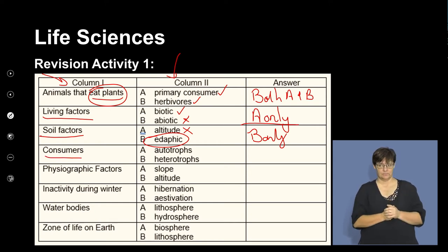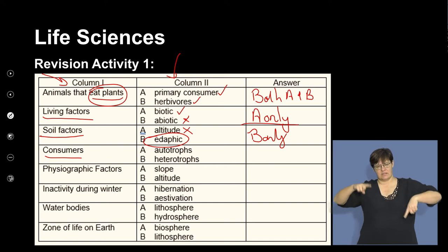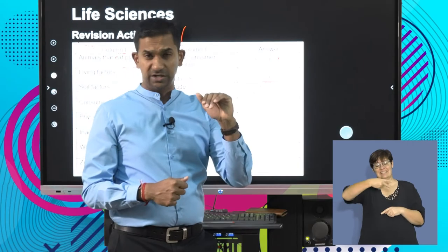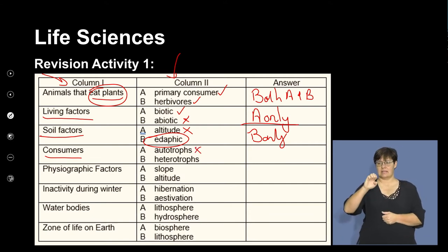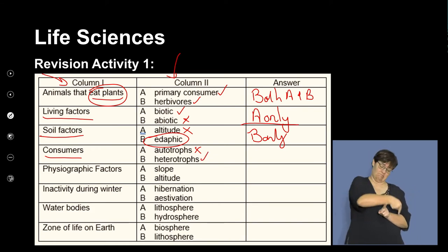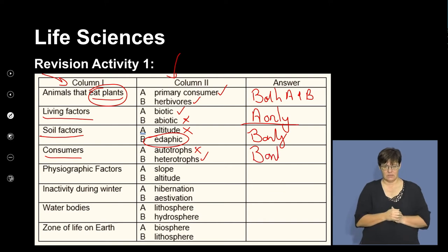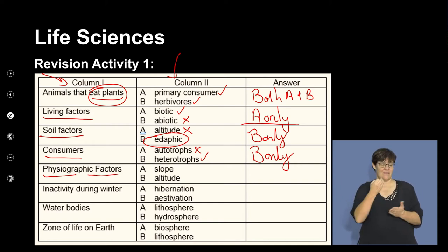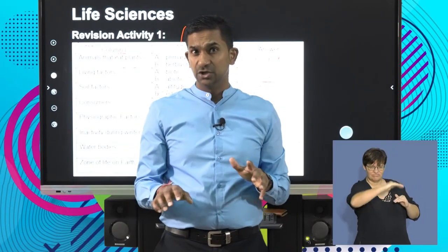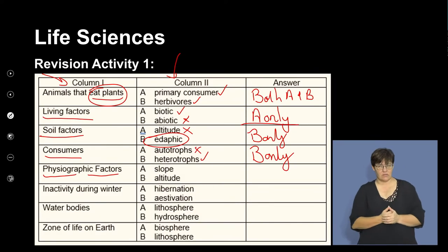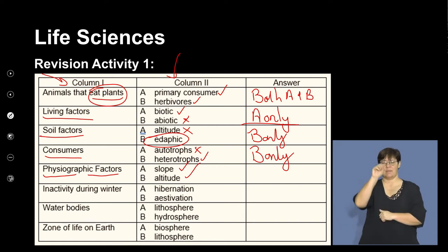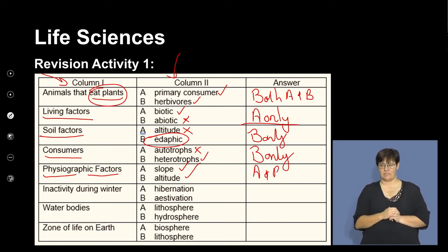Physiographic factors — I remind myself that these are the lay of the land: slope, altitude, and aspect. Both slope and altitude are correct, so it's both A and B. The next description is inactivity during winter. Some animals, to avoid extreme drop in temperatures, go through a process of winter sleep called hibernation. There is also estivation, which is a summer sleep to avoid extremely hot conditions. Hibernation describes the winter sleep; estivation describes a summer sleep. So the answer here is A only.